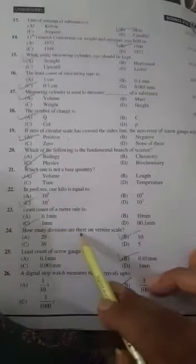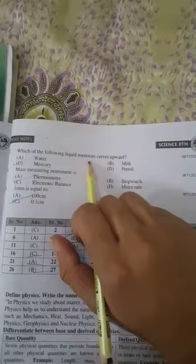Least count of meter rule is one millimeter. How many divisions are there on vernier scale? 10. Least count of screw gauges: 0.01 millimeter. A digital stopwatch may measure time intervals up to 1 over 100 second. Which of the following liquid...